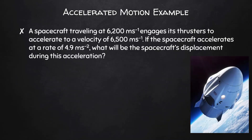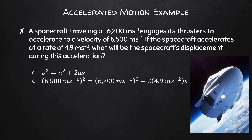A spacecraft traveling at 6,200 meters per second engages its thrusters to accelerate to a velocity of 6,500 meters per second. If the spacecraft accelerates at a rate of 4.9 meters per second squared, what will be the spacecraft's displacement during this acceleration? Based on our givens and unknown, we'll use V squared equals U squared plus 2AS, and we find the displacement is 3.9 times 10 to the 5 meters.